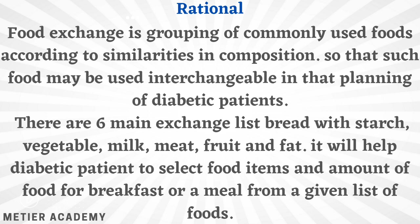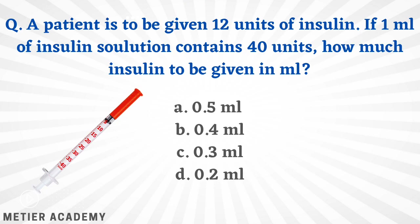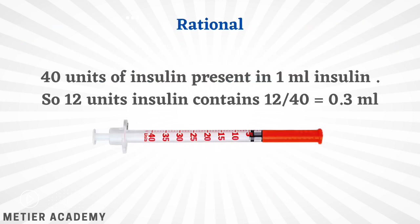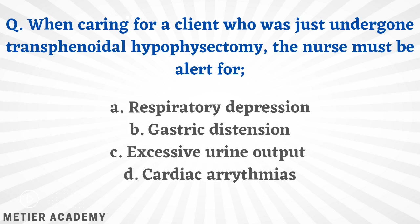Next: a patient is to be given 12 units of insulin. If 1 ml of insulin solution contains 40 units, how much insulin should be given? Options: 0.5 ml, 0.4 ml, 0.3 ml, 0.2 ml. The correct answer is option C, 0.3 ml. Calculation: 12 ÷ 40 = 0.3 ml.